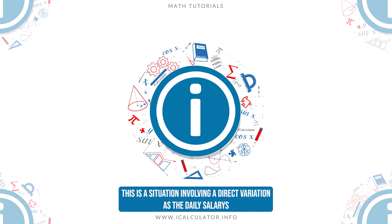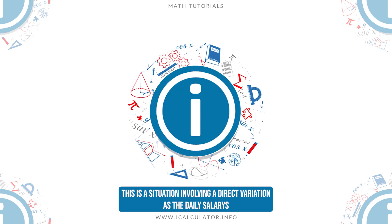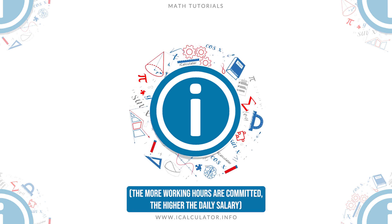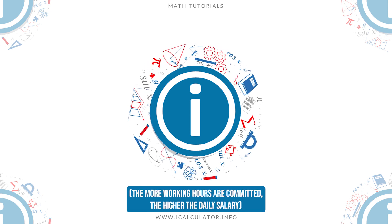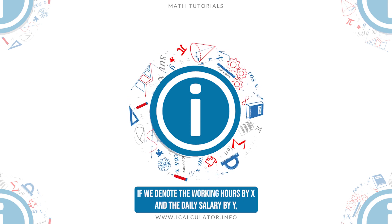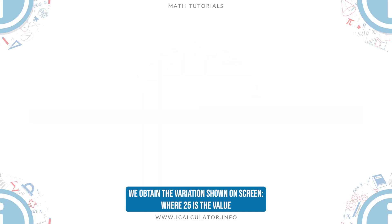This is a situation involving a direct variation, as the daily salary is directly proportional to the number of working hours. The more working hours are committed, the higher the daily salary. If we denote the working hours by X and the daily salary by Y, we obtain the variation shown on screen, where 25 is the value of the constant of proportionality K.